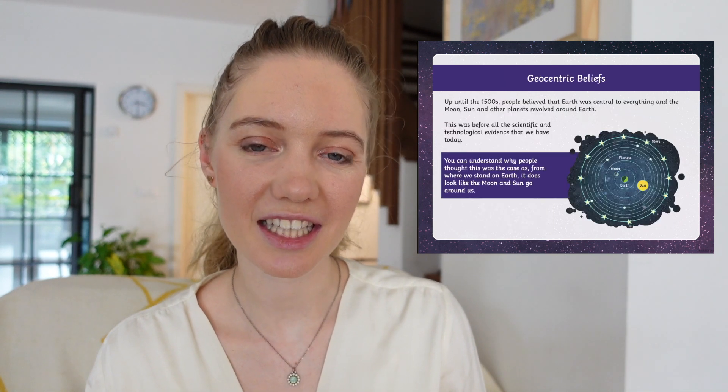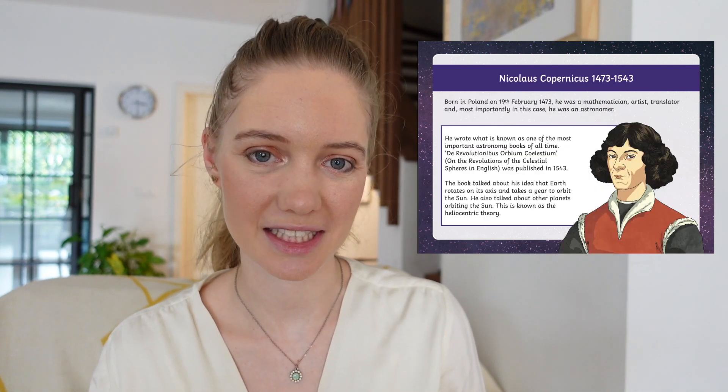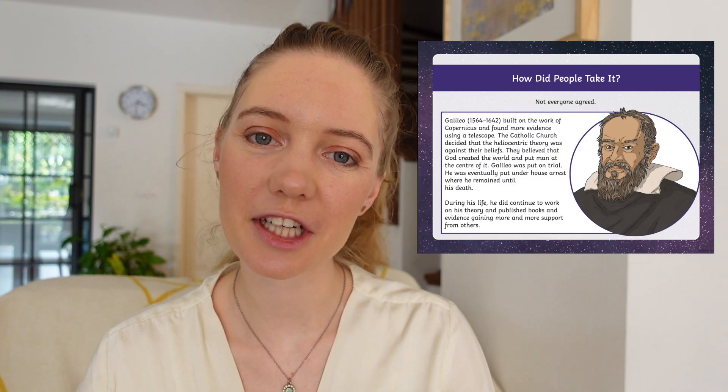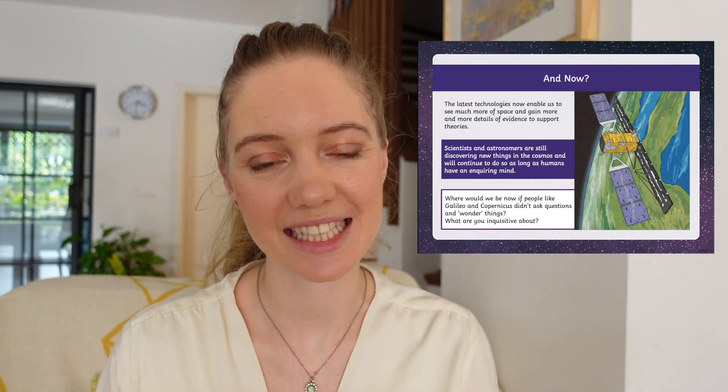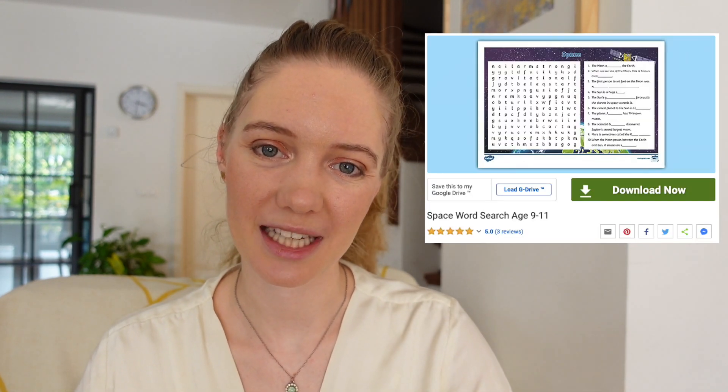This Key Stage 2 geocentric versus heliocentric PowerPoint provides a simple and concise explanation of the geocentric and heliocentric interpretations of the solar system. The presentation should only take between 10 and 20 minutes to show to your class, so you could pair it with a fun activity such as this space word search for ages 9 to 11.